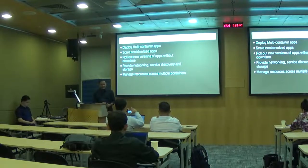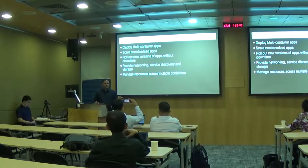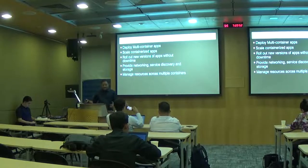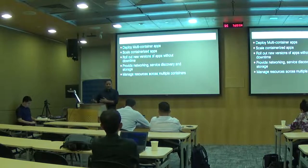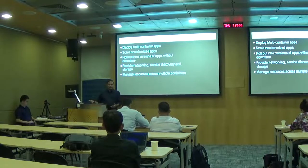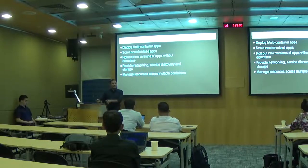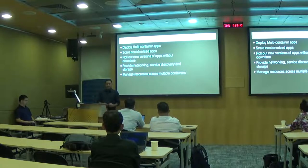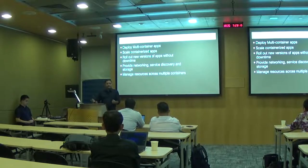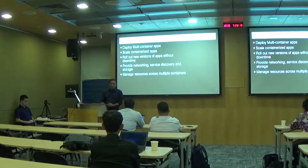It also gives you the flexibility of managing multiple resources across multiple categories. You can define resource constraints — for example, specifying that a database container needs 2GB of RAM to start. Kubernetes will figure out which node has this capacity, and if no node has sufficient capacity, it will not schedule the container. This intelligence is built in.